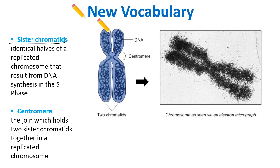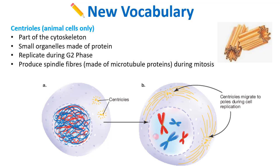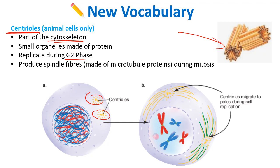Under an electron microscope you can clearly see all the little strands of a chromosome, showing how it's made of just one wound-together DNA molecule. We also need to know a new organelle: centrioles. They look like two little cylinders sitting next to each other, are part of the cytoskeleton, and are made of protein microtubules. During G2 they copy themselves. Most importantly, they produce long microtubule proteins called spindle fibers, which look like legs of a daddy long-legs spider and are critical in mitosis.